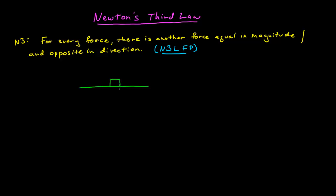Let's consider a book on a table. One of the forces on this book is the force due to gravity attracting the book to the Earth. The question is: what is the Newton's Third Law force pair to that force of gravity on the book? Take a minute, come to a conclusion, and write it down. The book is simply at rest on the table.